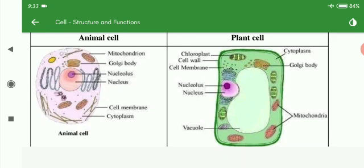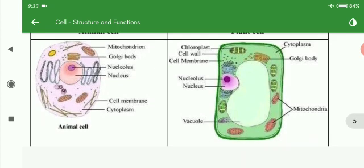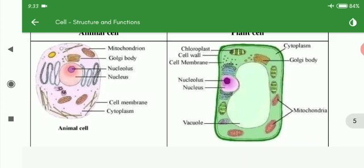These are the basic differences between plant cell and animal cell. The vacuole in the plant cell is very large, which is very small or diminished in the animal cell. In animal cells, vacuoles may be absent.